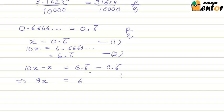The part after the decimal which is the repeating part gets cancelled and we are left with just 6. This equation gives us x is equal to 6 by 9 or 2 by 3.